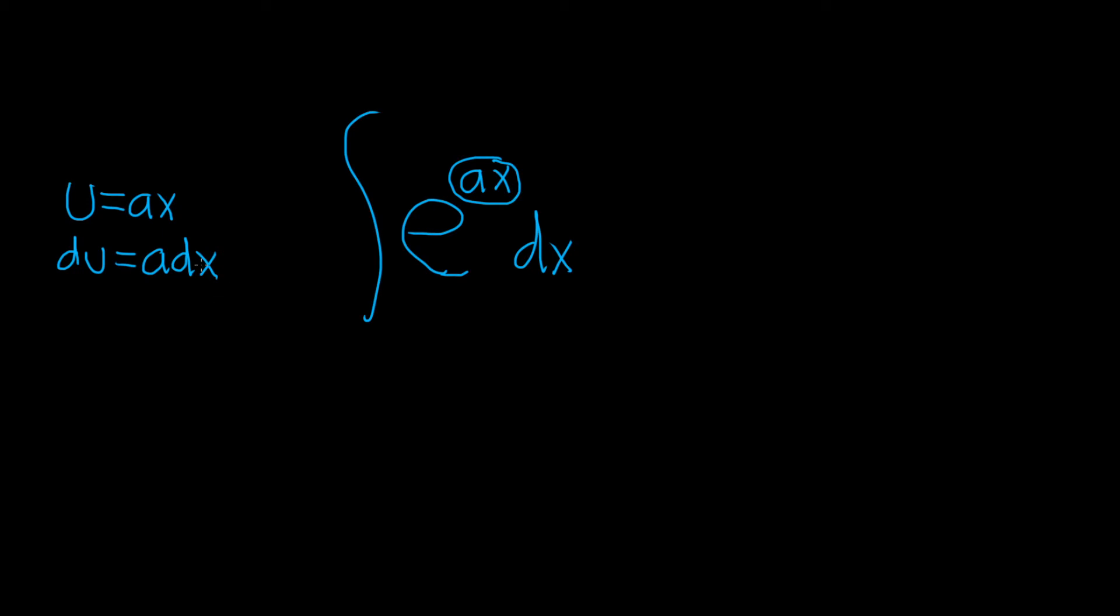Now the goal is to make this look like what's in our integral. So we don't have an a in our integral, so what we'll do is divide both sides by a. So now we have 1 over a, du, and that's equal to dx.